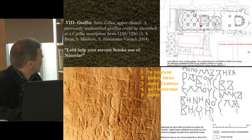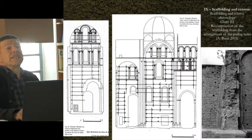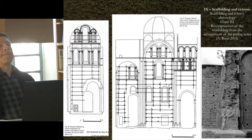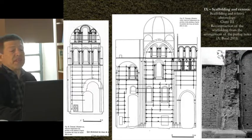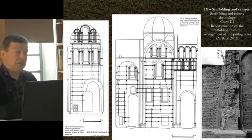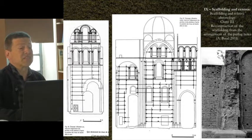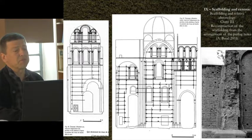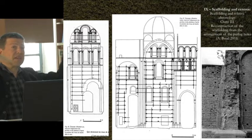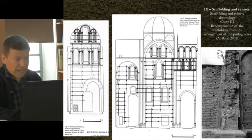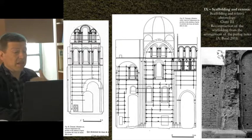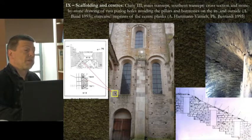The ninth point is the traces left by the building process itself and what they tell about the building process — in particular, putlog holes. If there is wood it can be dated, but also the pattern of the scaffolding can be reconstructed, which shows which parts of the building under construction were accessible at the same time. This is one of the arguments that Beau could develop to prove that different types of masonry at Cluny were actually built simultaneously, as you can see with these scaffoldings and the position of the putlog holes inside and outside the elevation.